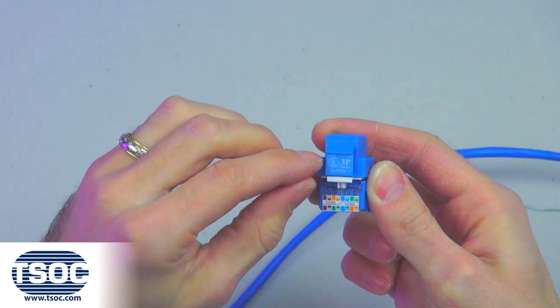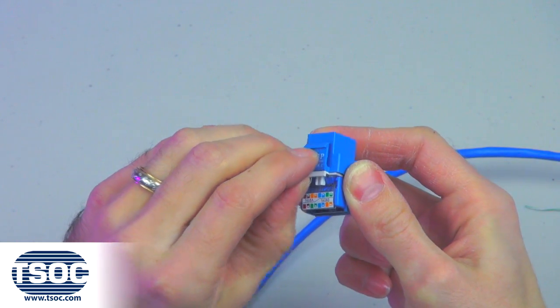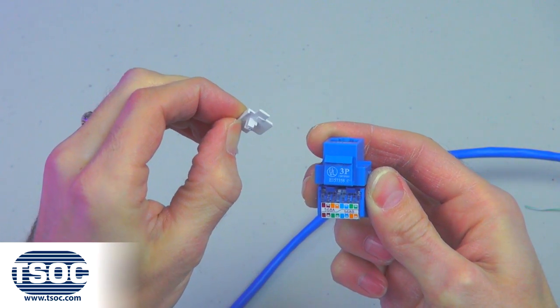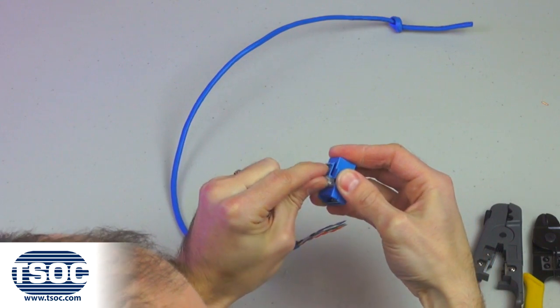Remove the locking clip from the CAT-5E RJ-45 Toolless Keystone Module to open the hinge door.